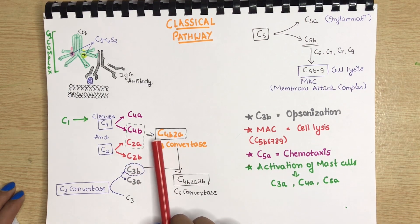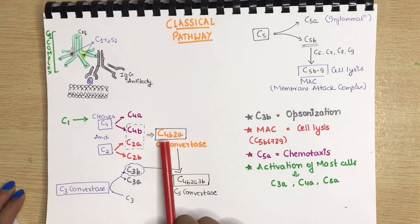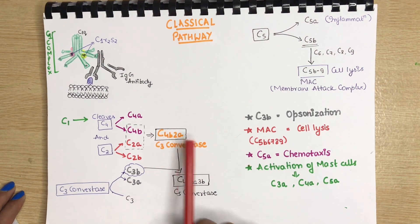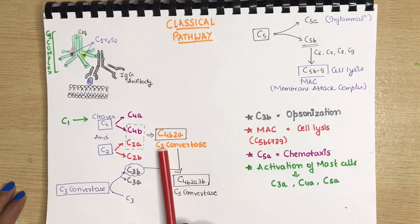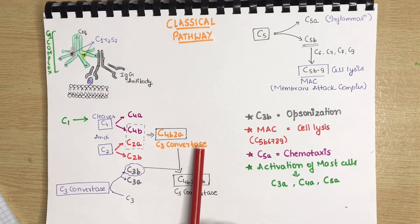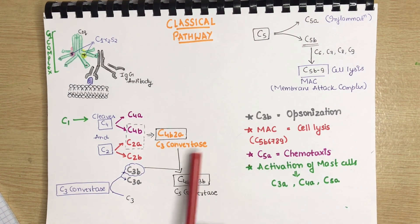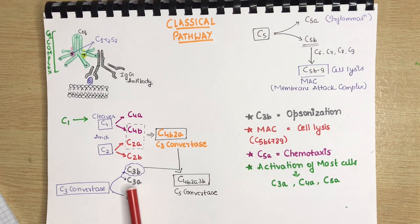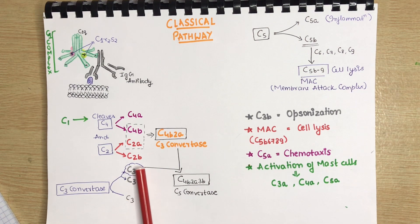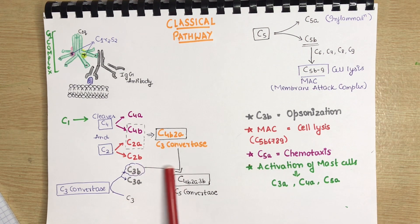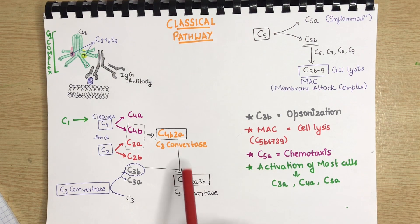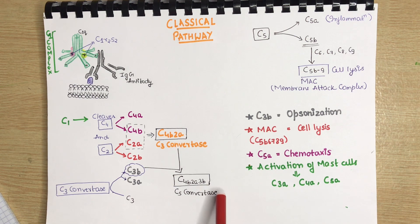As the name suggests, it will help in cleavage of C3. So, now the C3 convertase will cleave C3 into C3A and C3B. Now, the C3B will combine with the C3 convertase and form C4B2A3B which is the C5 convertase.